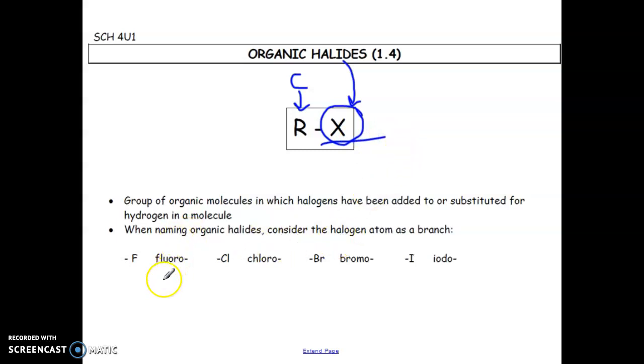Okay, and we mentioned this already, but when you have an organic halogen, the halogen atom itself is a branch off of the parent chain. So just the rules of branches still stay the same. So they have to be written in alphabetical order, you need the lowest set of numbers, and if you have multiples of the same branch, you have to use prefixes like di, tri, tetra, etc.